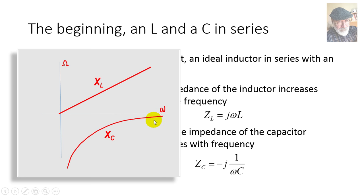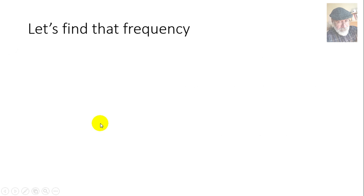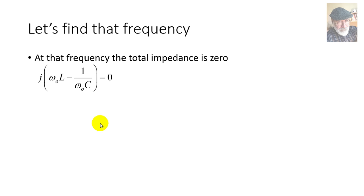The reactance of the inductor keeps growing forever with frequency, while the reactance of the capacitor keeps decreasing, maintaining a negative value. At one frequency, ω₀, the magnitudes of both will have the same value, and being of opposite signs, their series combination is zero.